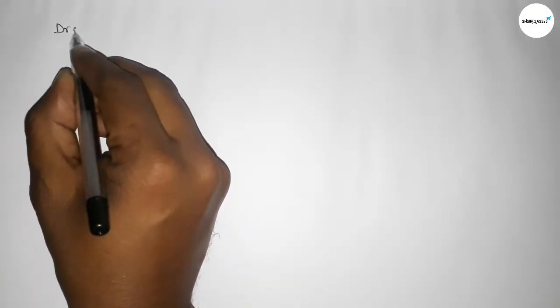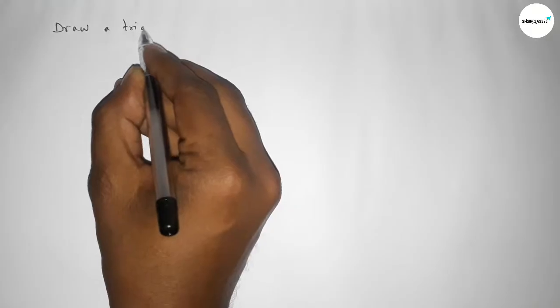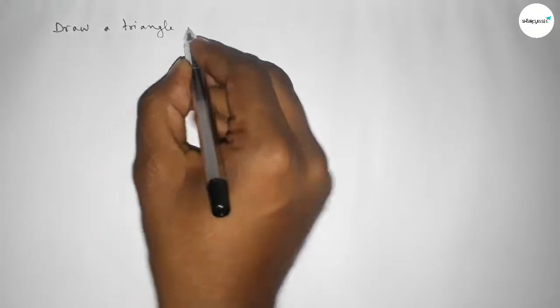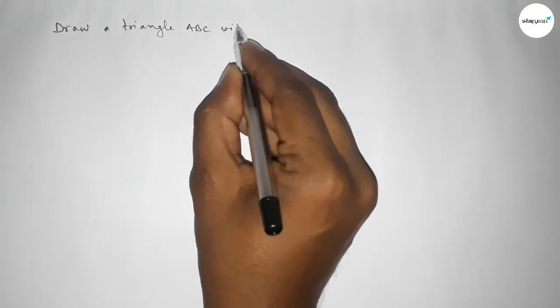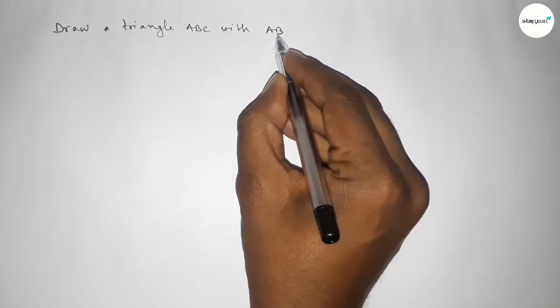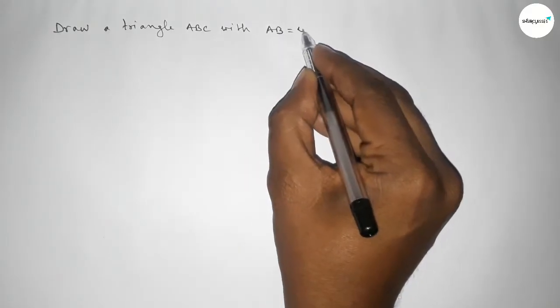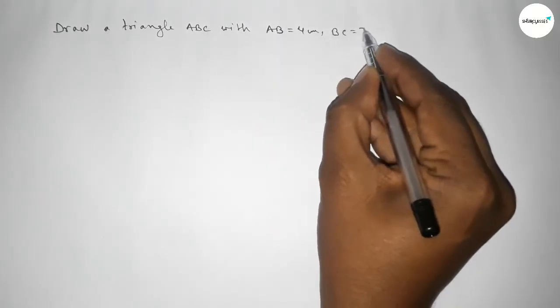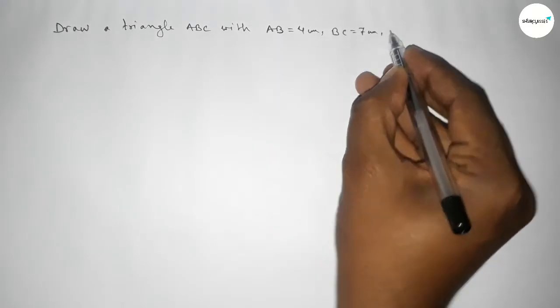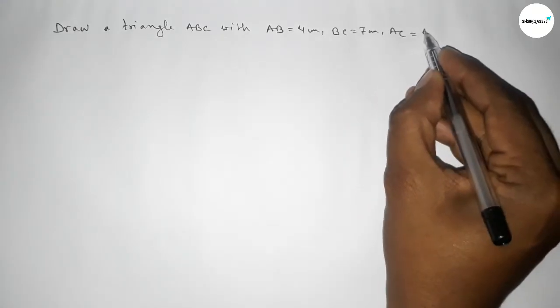Hi everyone, welcome to SISSR Classes. Today in this video we have to draw a triangle ABC with AB equal to 4 centimeters, BC equal to 7 centimeters, and AC equal to 5 centimeters by using a compass. So let's start the video.